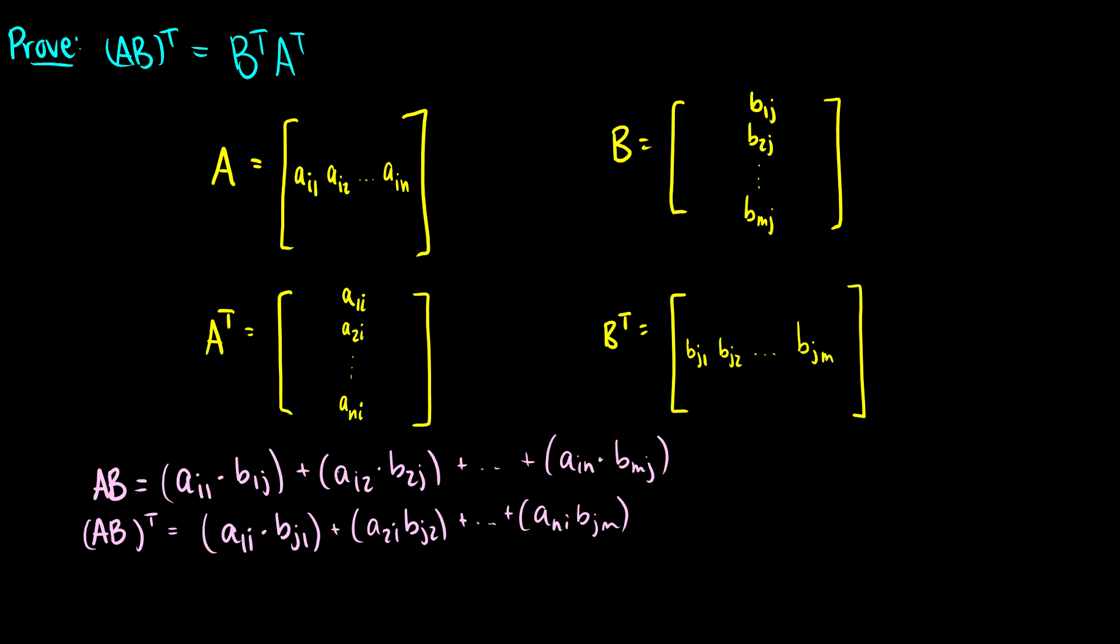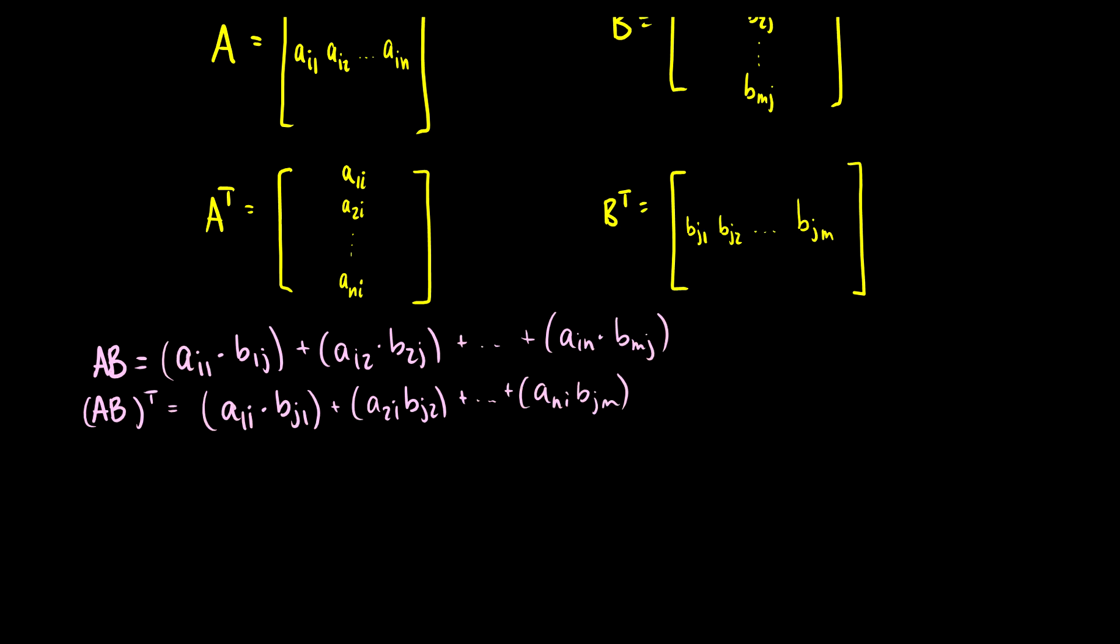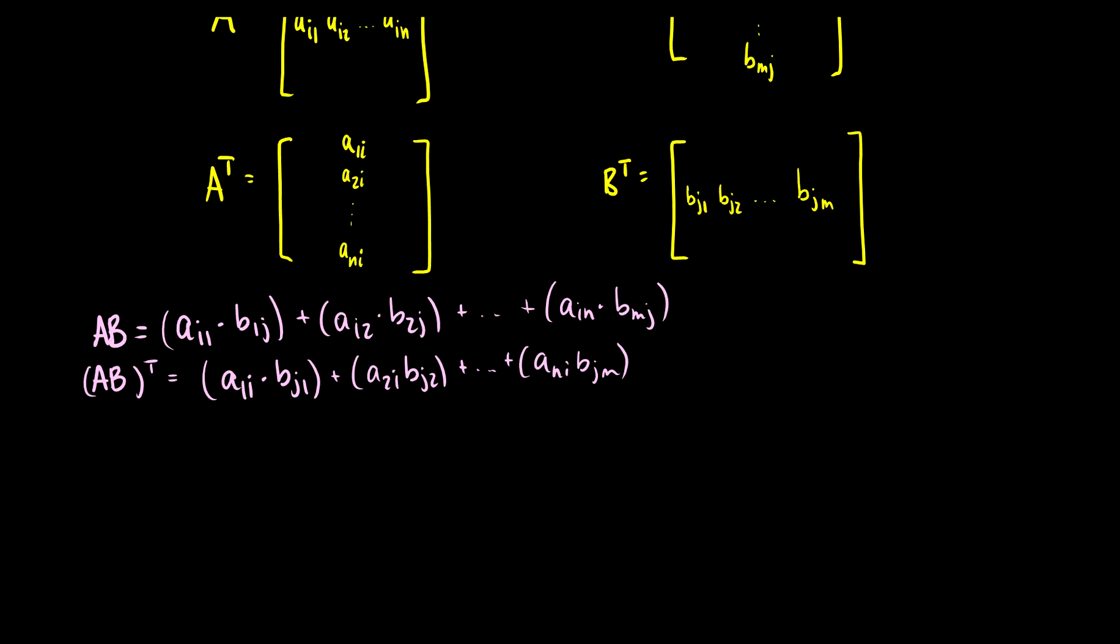So that is the transpose operation working in effect. So now let's take a look at what B^T times A^T is. So just like we did in the first multiplication, B^T times A^T.